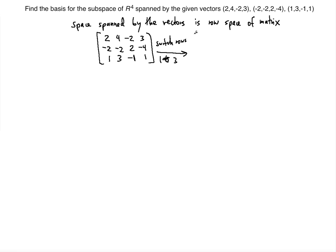So then what are we gonna have? We're gonna have 1, 3, -1, 1, the second row stays as usual, and 2, -4, and then the original first row 2, 4, -2, 3.